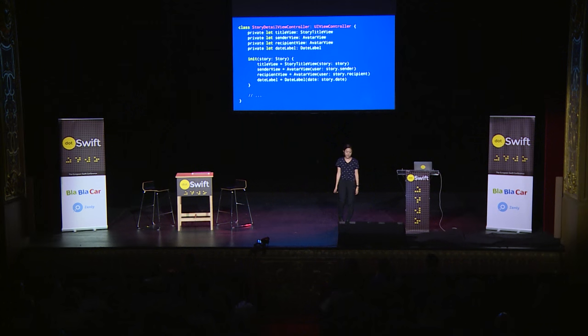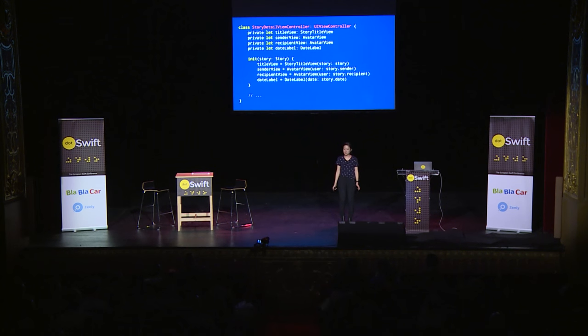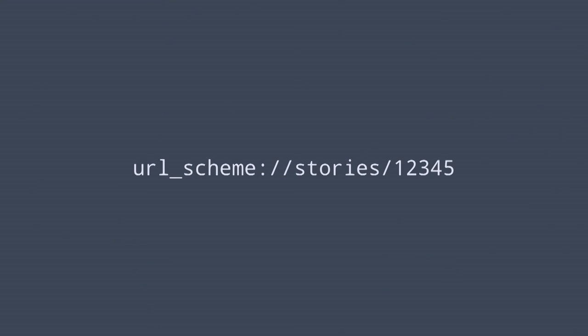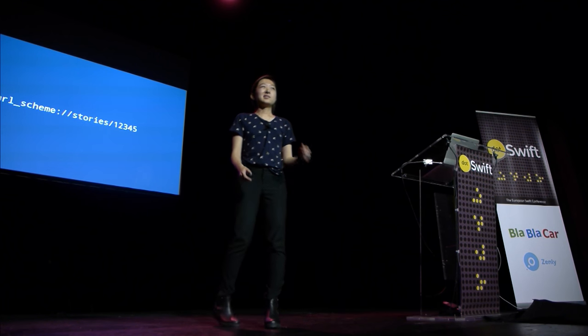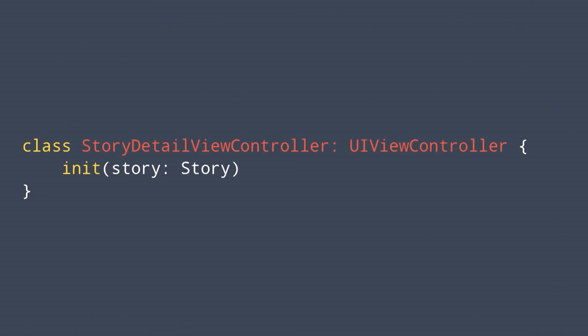The implementation might look something like this. It has a bunch of subviews, and in the initializer, we use that story and set all these subviews. This is pretty fine — we have immutable, non-optional things. Once you make it, it doesn't change at all, and things are working well. Then as we were implementing more features, we had to implement push notifications. For push notifications, we need to handle all these URL schemes.